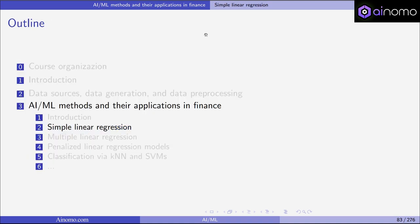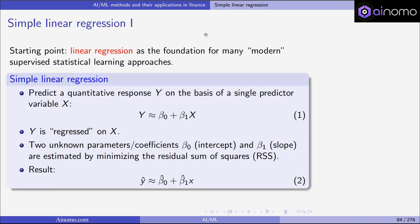This was a very short introduction. Let's now turn to simple linear regression, which you probably know from your introduction to statistics. Linear regression is the foundation for many modern supervised statistical learning approaches. We are in the supervised setting, meaning we have an outcome. In simple linear regression, we want to predict a quantitative response y on the basis of a single predictor variable x. We assume a linear relation between x and y, meaning y is approximately equal to β₀ plus β₁ times x.